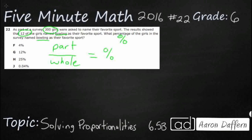As a part of our survey, 300 girls were asked to name their favorite sport. So this looks like our total. So we are going to call this our whole. So we are going to say 300 girls. I am going to call that 300g. That is going to be our whole.